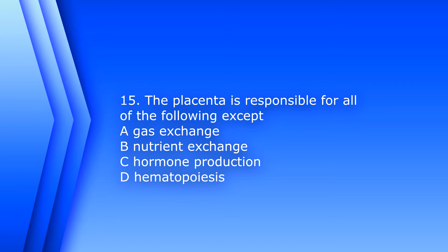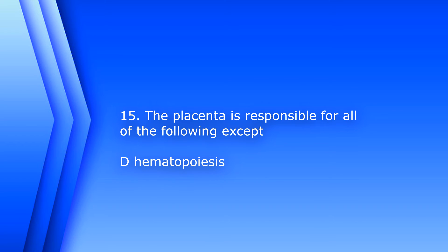Number 15. The placenta is responsible for all of the following except: A. Gas exchange. B. Nutrient exchange. C. Hormone production. Or D. Hematopoiesis. The answer is D. Hematopoiesis. The placenta is responsible for gas exchange, nutrient exchange, and hormone production. Fetal hematopoiesis, or the production of blood cellular components, begins in the yolk sac and continues in the liver during fetal development.